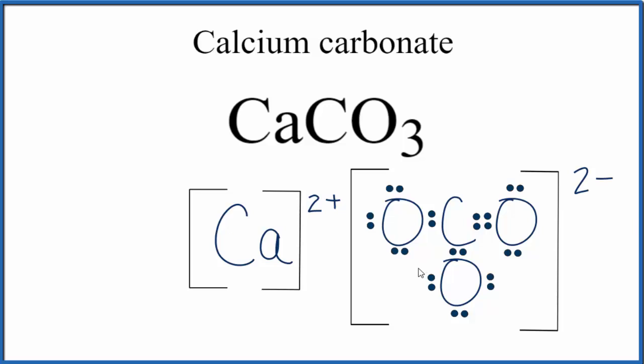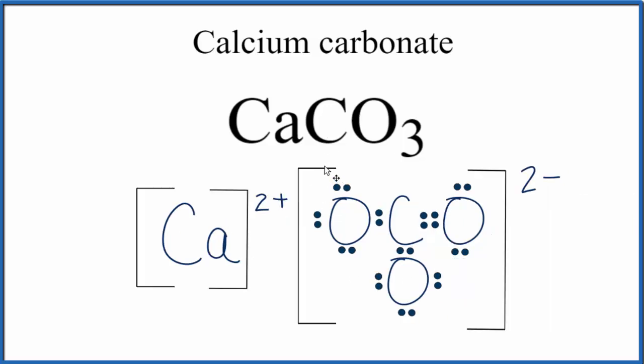So this is the Lewis structure for calcium carbonate. We write the structure this way because it's ionic. Because the calcium, which normally has two valence electrons, has transferred these electrons to the carbonate. That is what allowed us to write the full Lewis structure.